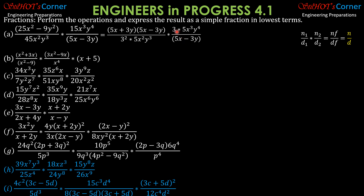For the constants, we cancel (5x − 3y) with (5x − 3y), this 3 with one 3 in the denominator — there is still 3 in the denominator — and 5 with 5. So there is no more constant in the numerator, but we have (5x + 3y). For x: x³ in the numerator, x² in the denominator, so x remains in the denominator. For y: y to the 4th and y³, so y remains. Therefore, the simplest form is (5x + 3y) · xy over 3.